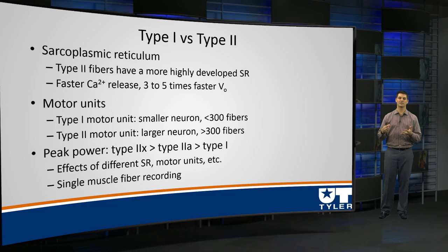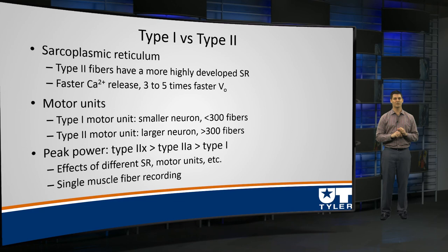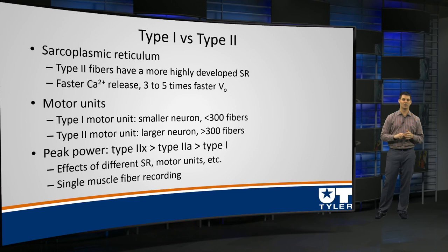I'll gloss over motor units here — we'll have already covered them when studying for the exam. But briefly: type 1 has a smaller neuron and lower number of fibers, whereas type 2 is much larger. That'll be an entire focus of one video. In terms of power: type 2B or X is greater than 2A, which is greater than type 1 — as a function of all these properties.